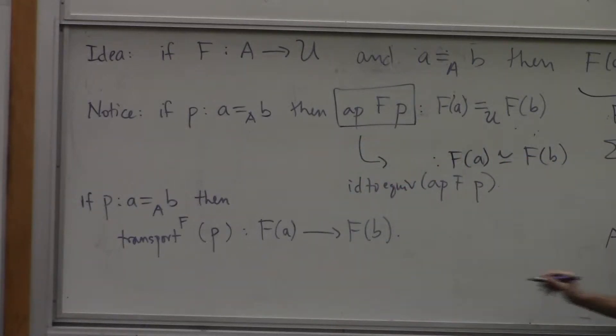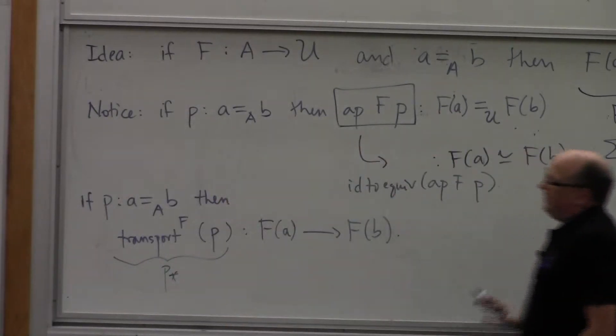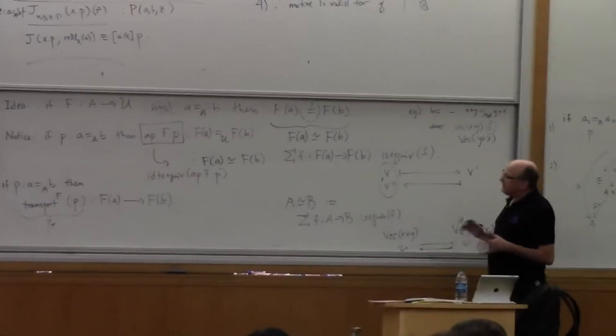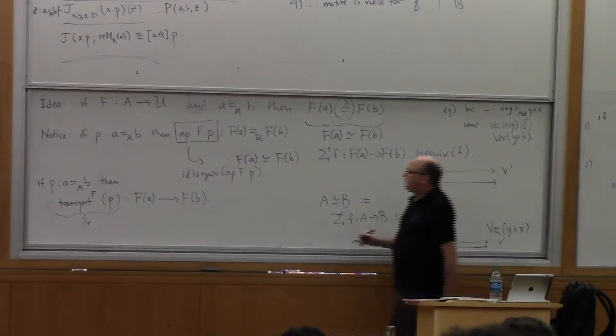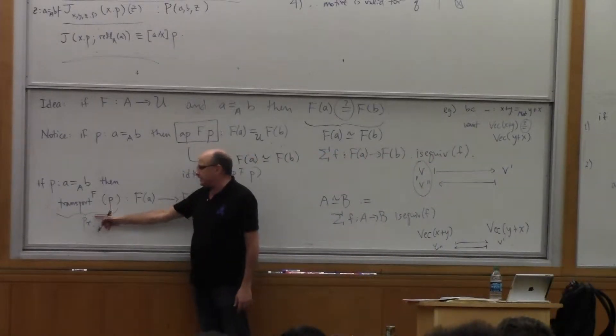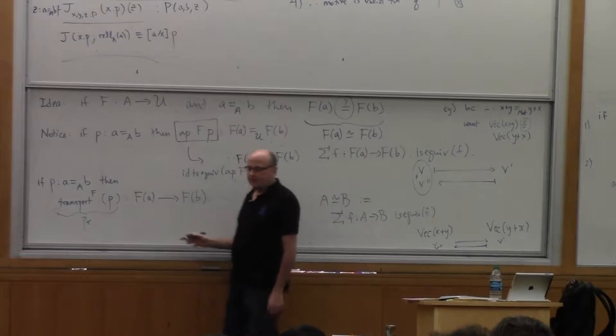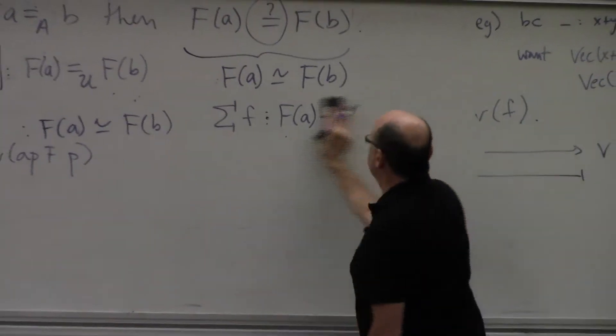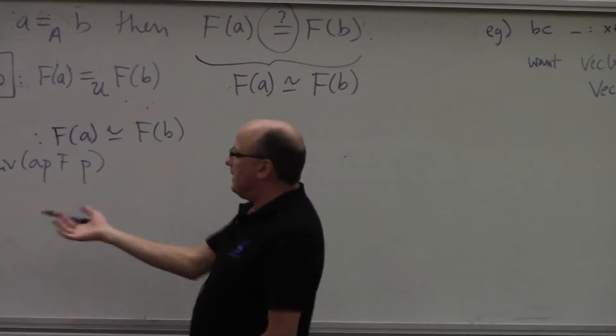Transport of p will be from f of a to f of b. That's the way to write it. And that thing is often notated p lower star. The notation is a little not the best because you really need to know what f is in order to know what p lower star is. But in many situations the f is clear. So what I'm going to do is just define that thing by path induction.